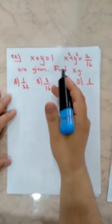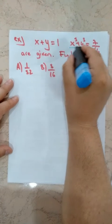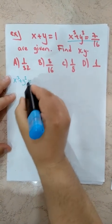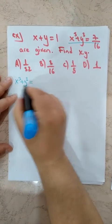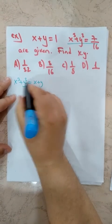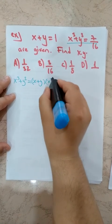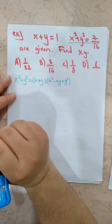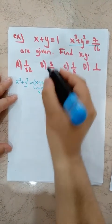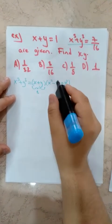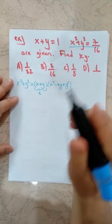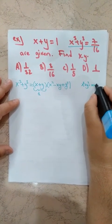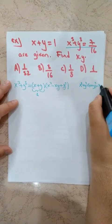Let's find the answer. We expand X cubed plus Y cubed as the sum of two cubes: X plus Y times X squared minus XY plus Y squared, which equals 7 over 16. Since X plus Y equals 1, we substitute. Also, recall the hint: X squared plus Y squared equals X plus Y squared minus 2XY.